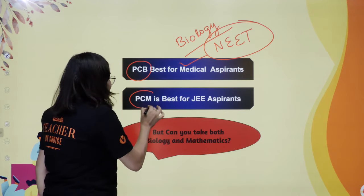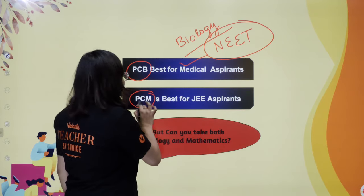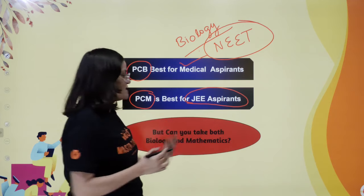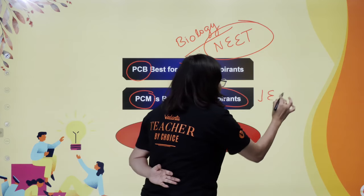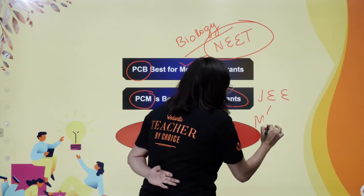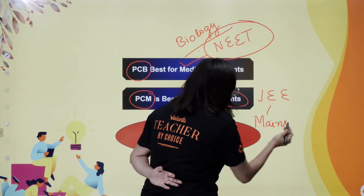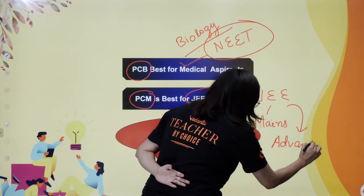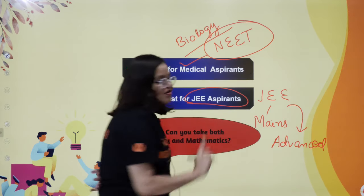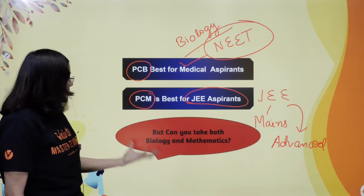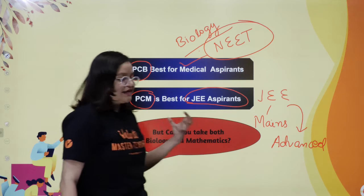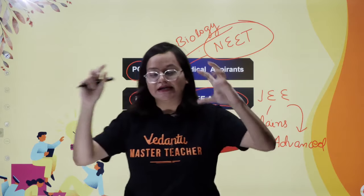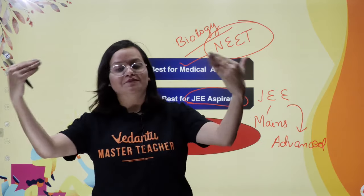Next, what is PCM? Physics, Chemistry, and Mathematics, which is very useful for JEE aspirants. Those preparing for JEE have two main papers: Mains and Advanced. If you clear the Mains, then you can sit for the Advanced exam. But you can also take both Biology and Mathematics — you can be very dedicated and more options will open up for you.